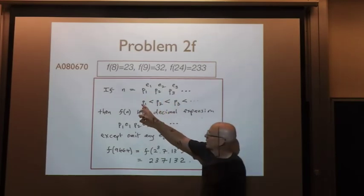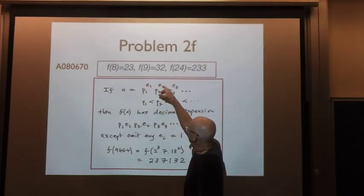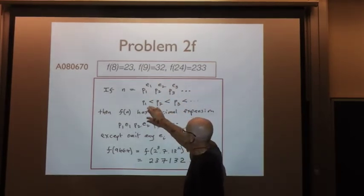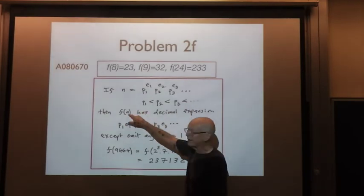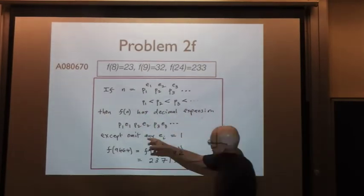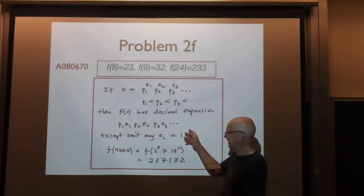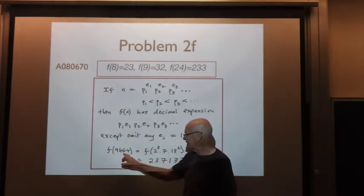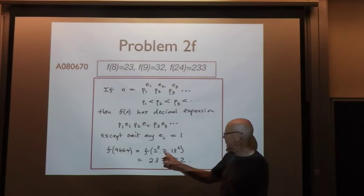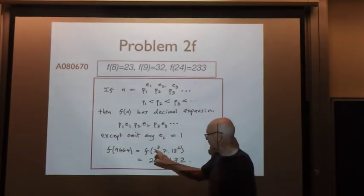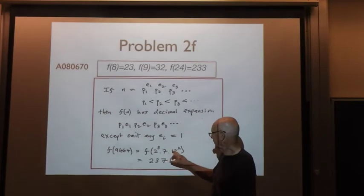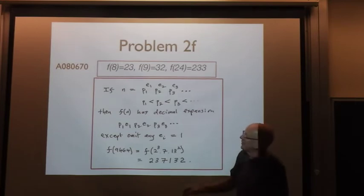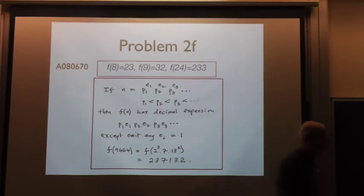Here's the definition. You write n as a product p1^e1 × p2^e2 — primes to various exponents. If the exponent is 1, you omit it. Then f of n has the decimal expansion: p1, e1, p2, e2, p3, e3, omitting any exponents equal to 1. For example, look at the number 9464. That happens to be 2 cubed times 7 times 13 squared. That gets mapped to 2, 3, 7, 13, 2 — i.e., the decimal number 23,7,13,2 = 237132. That's f of n. So that's the sequence A080670.